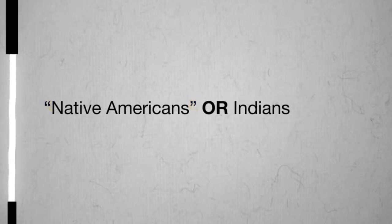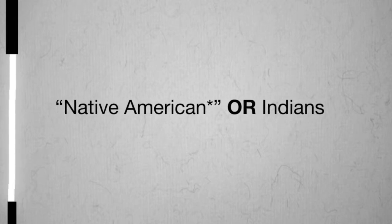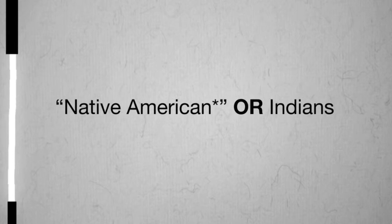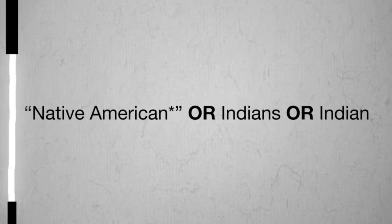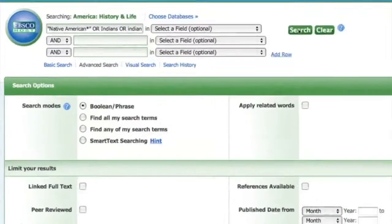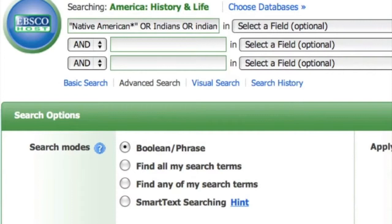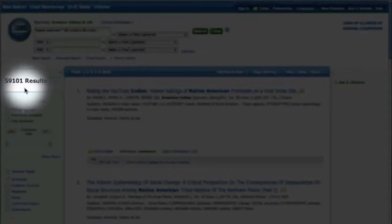Remember also to truncate where appropriate. I will truncate 'Native Americans' after the N. I won't, however, truncate the word 'Indians,' because I don't want to retrieve articles on the state of Indiana. Instead I'll just add 'Indian' as a separate search term. The OR operator tells the search engine to retrieve documents that have at least one of these search terms. Let's try the search in the database America History and Life. As you can see, there are many records in this database that have one of these three terms. When searching in library databases, you will use the OR operator to search for multiple terms that represent the same facet of your topic.